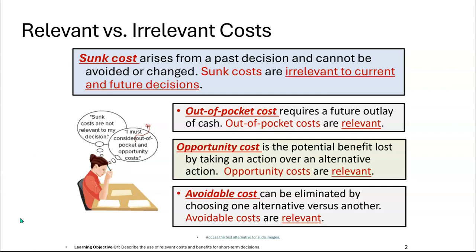What we look at are the incremental costs associated with the decision. We have out-of-pocket costs, which are additional cash outlays. We have opportunity costs — what you lose out on when you make a decision. And avoidable costs — what cost goes away if you make the decision.